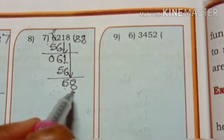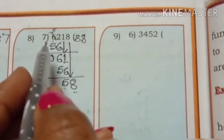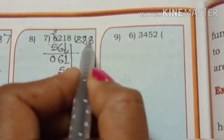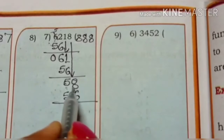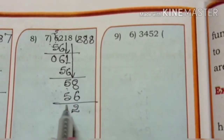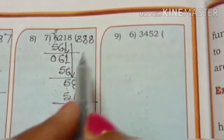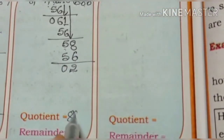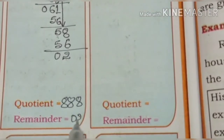Divide 58 by 7. We divide 8 times again. 7 eights are 56. 8 minus 6 is 2, 5 minus 5 is 0. The quotient is 888 and remainder is 2.